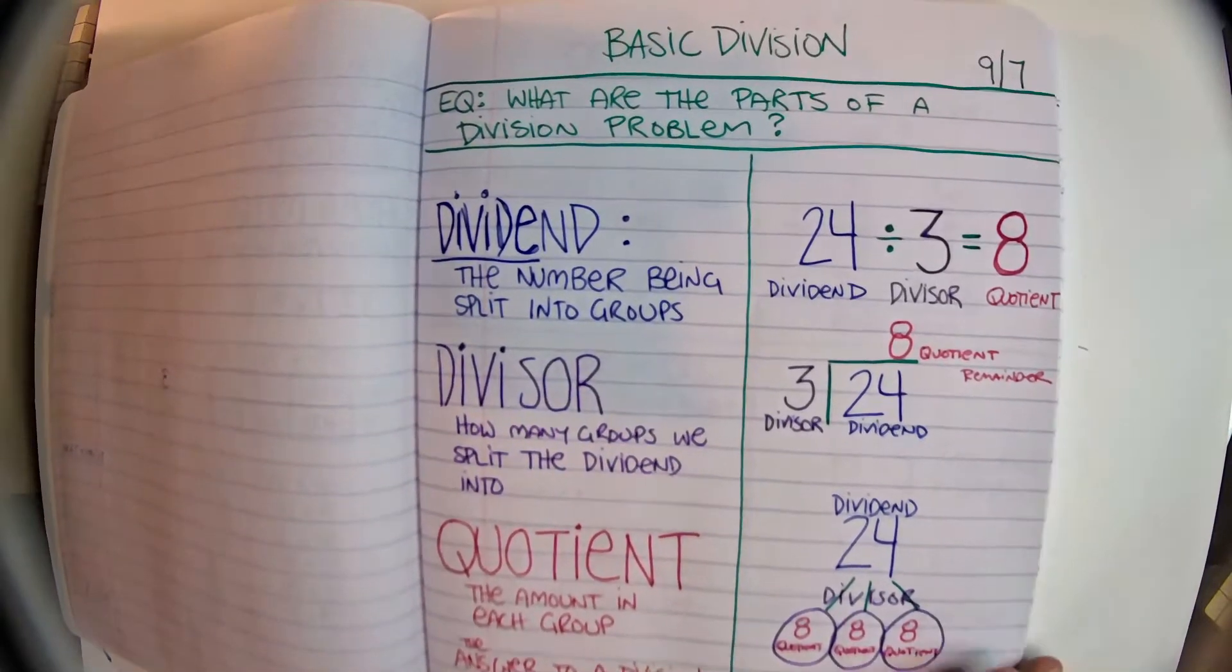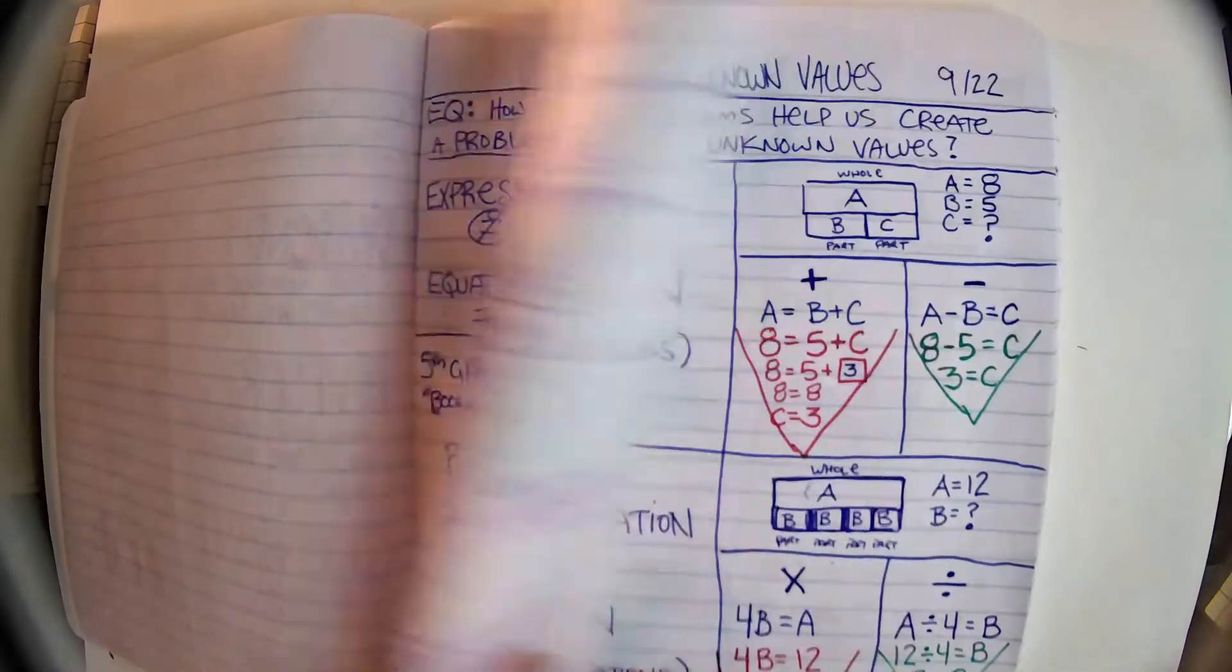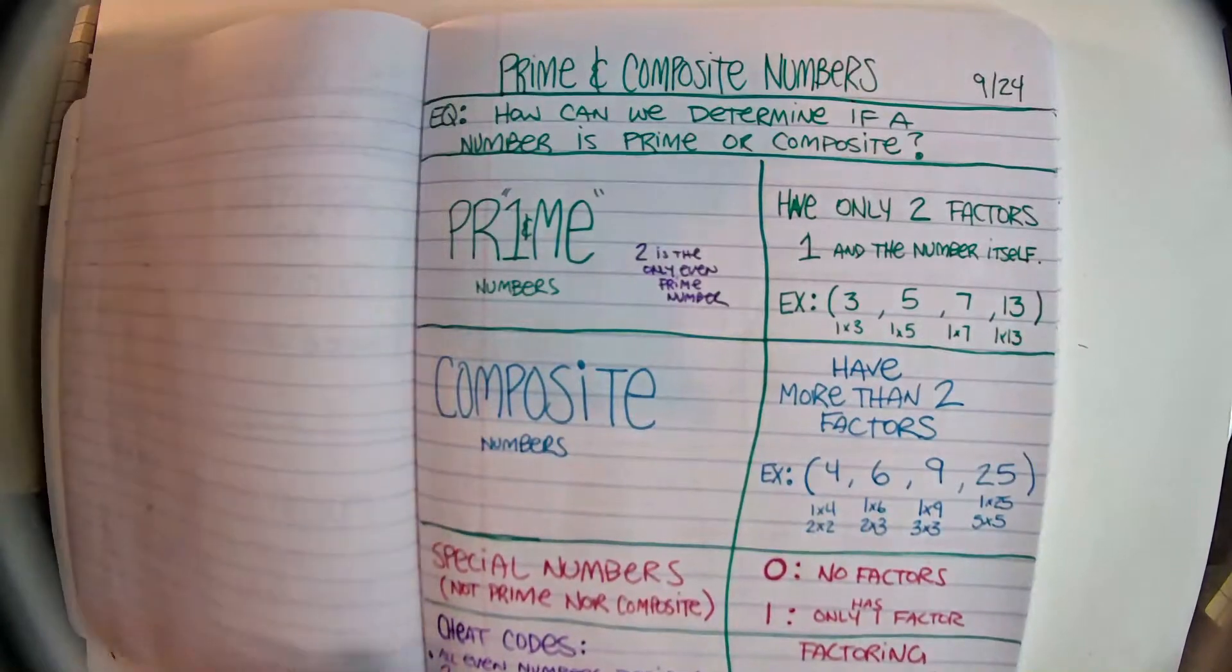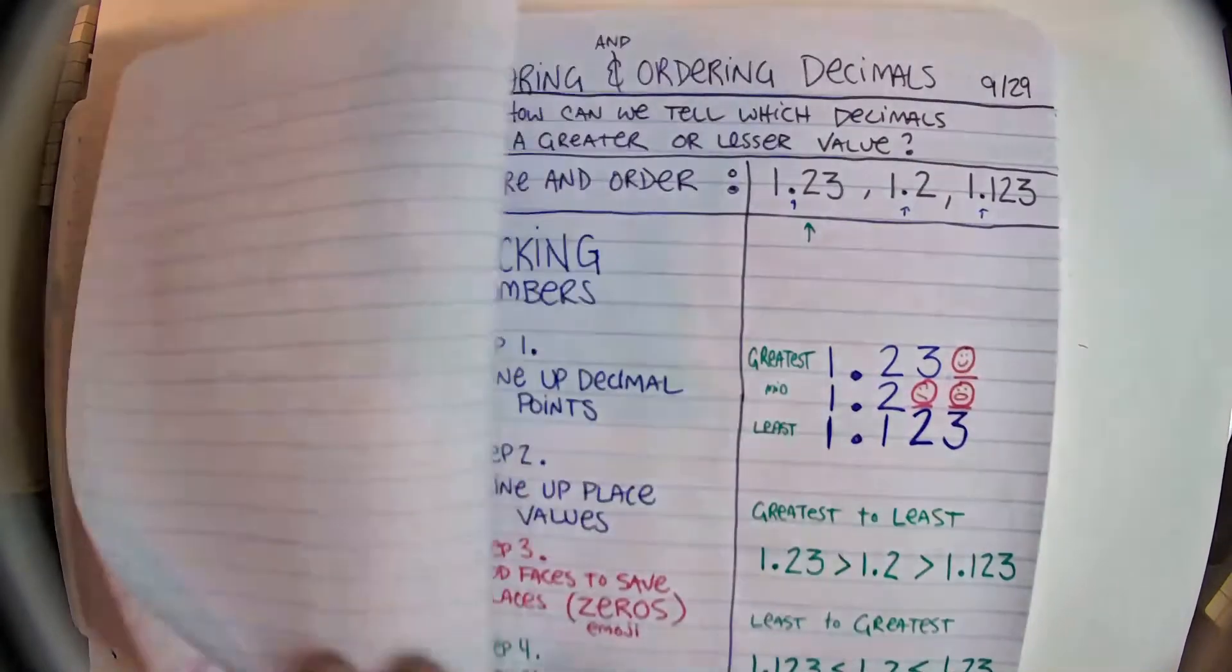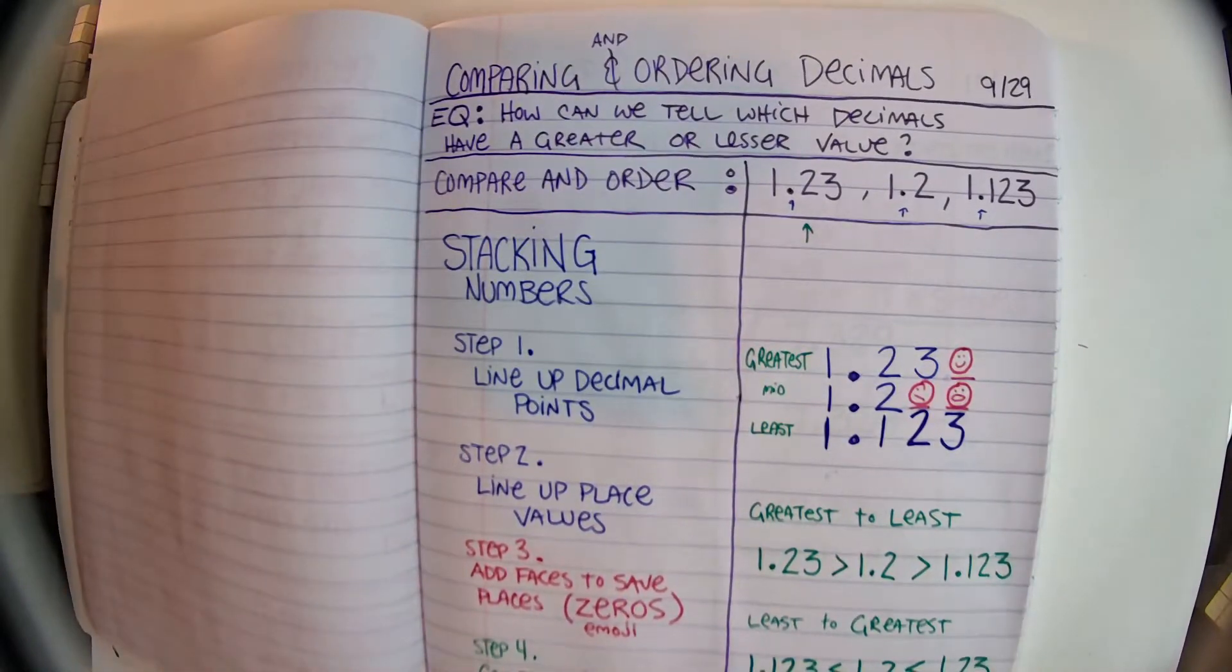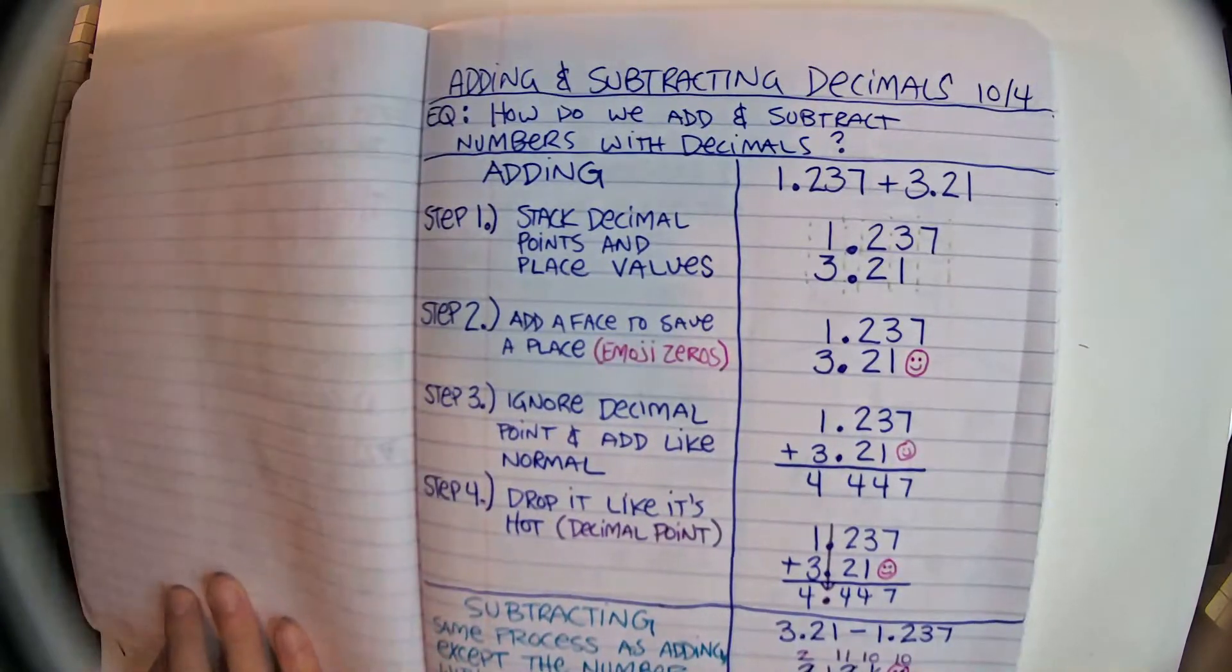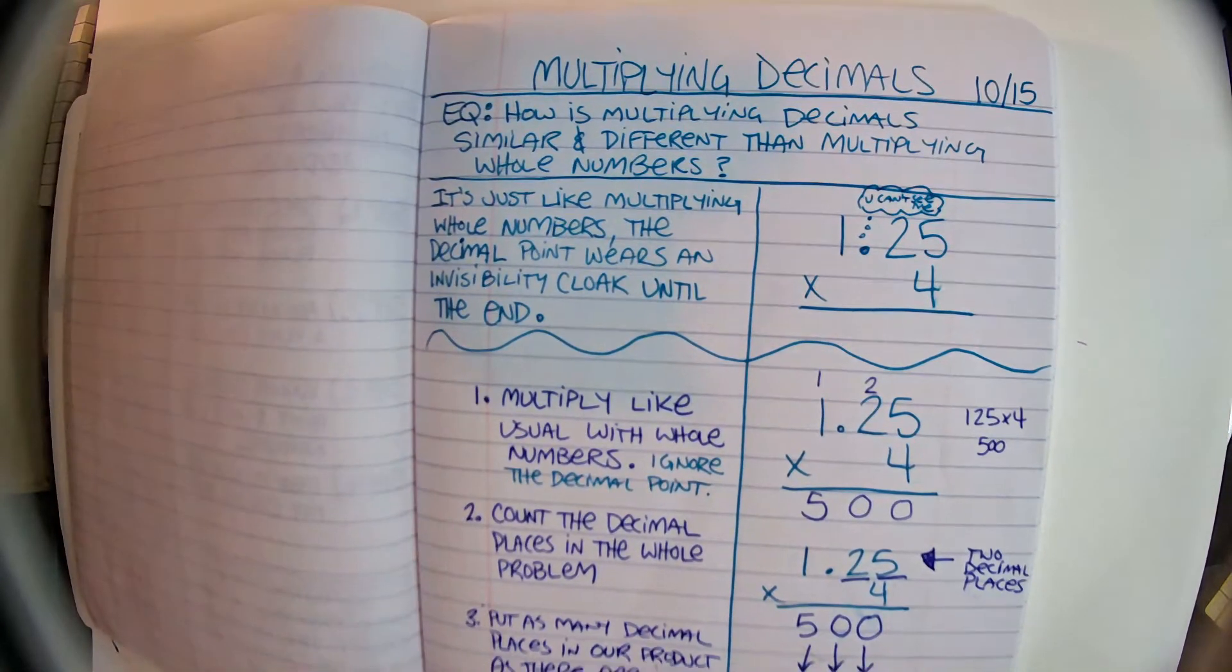So, if you forget what those mean, remember they're on this page from September 7th. Order of operations. Strip diagrams and unknown values. Prime and composite numbers. Decimal place value. Comparing and ordering decimals. Rounding decimals. Adding and subtracting decimals. Multiplying decimals.